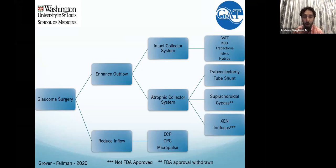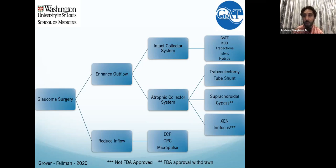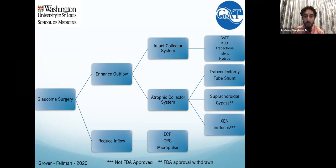For primary tube shunts, many times it's patients coming from a distance. Once you start getting facile with a couple of tubes you might end up picking one that just works for you. With TVT and PTVT data, if angles have failed or they've already had cataract surgery, patients with a tube shunt generally seem to do better than trabeculectomy patients, especially if they've had prior surgery.